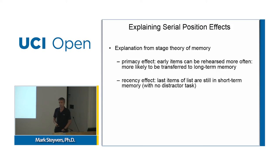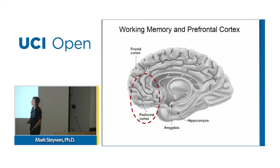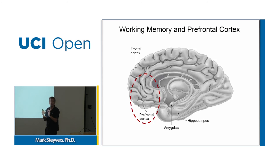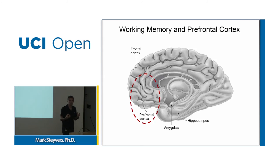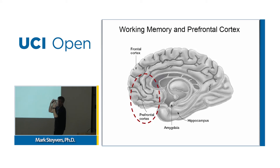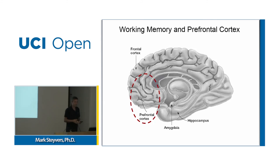Where is memory going on in the brain? Specifically, when we try to actively hold on to memories, the prefrontal cortex — indicated here — is a critical area. It's needed to rehearse information before it gets transferred to long-term memory, which involves different brain areas. If your prefrontal cortex is not working properly, you will have a hard time maintaining information.